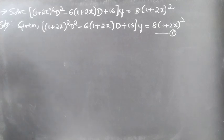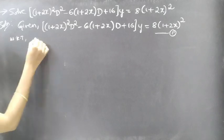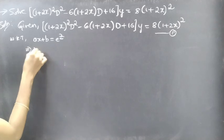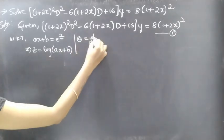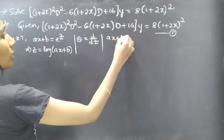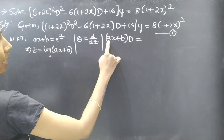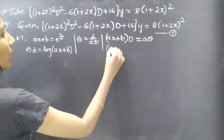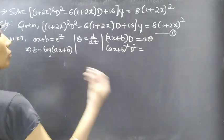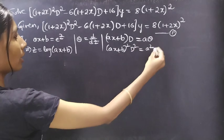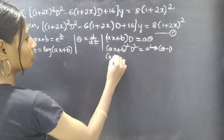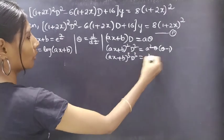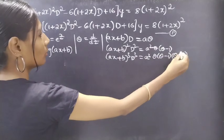From the Legendre's equation procedure, we know that (ax+b) can be replaced by e^z, then z = log(ax+b). Here θ is the differential operator with respect to z. The term (ax+b)·D can be replaced by a·θ (the coefficient of x times θ). And (ax+b)²·D² can be replaced by a²·θ(θ−1). If we have a cube term, it becomes a³·θ(θ−1)(θ−2).